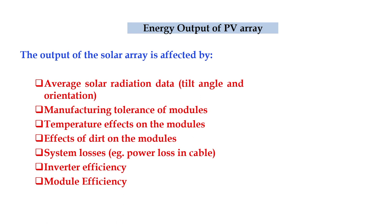The performance analysis provides useful information to policy makers and interested individuals and organizations about the actual performance of a grid-connected PV system in a region or country. The energy output of a PV array is affected by many parameters: average solar radiation data including tilt angle and orientation, manufacturing tolerances of modules, temperature effect on modules, effects of dirt on modules, system losses including DC and AC cable losses, inverter efficiency, and module efficiency.